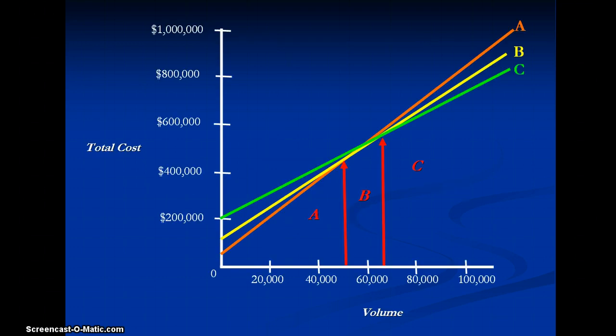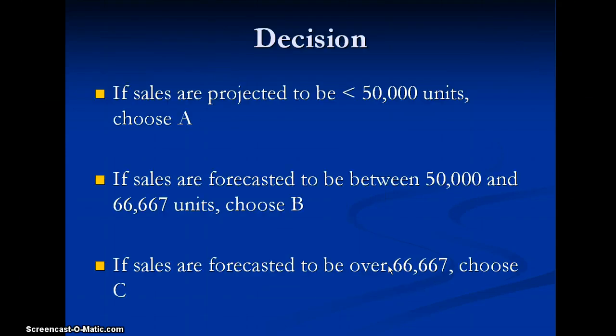So let's go back to our graph. This is where we left off. Now what we can do is we can actually find the volume at which these intersection points take place. So for example, 50,000 is this intersection point. And then moving over, we have 66,667. So this essentially gives us our decision rule.